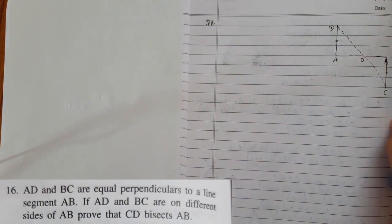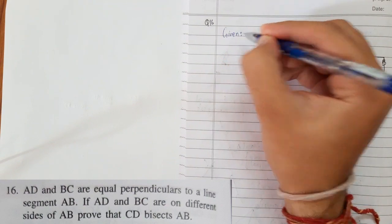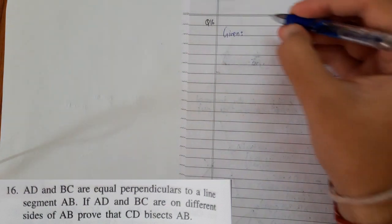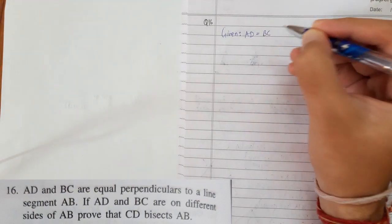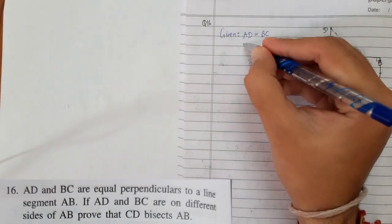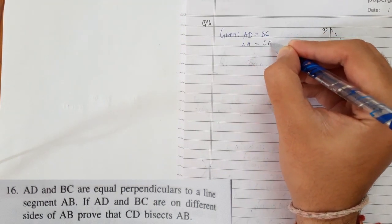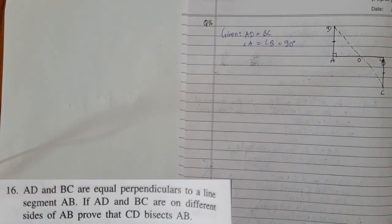So let's write the given thing. Given is AD is equal to BC. Secondly, these are 90 degree: angle A equals to angle B equals 90 degree, because they are perpendicular.